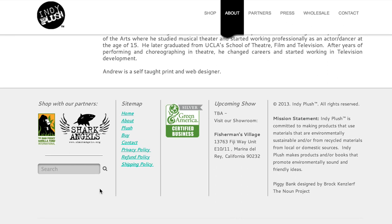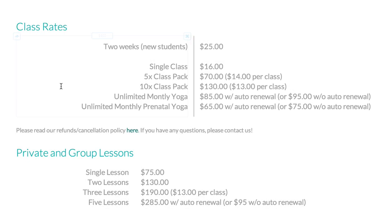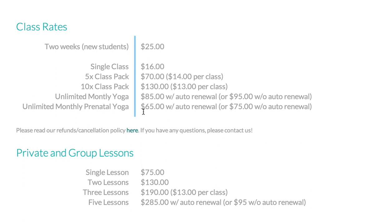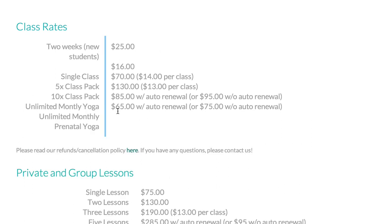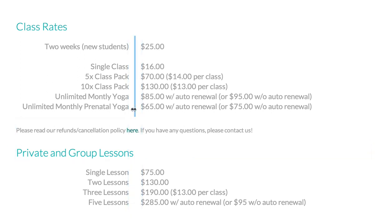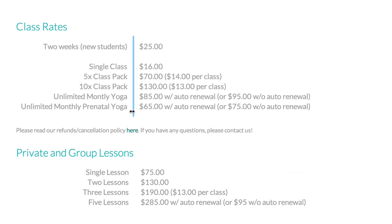Now you might worry that having the option to so easily create columns could lead to a sloppy looking page. But now when you adjust the width of any column, we'll automatically guide and snap it to columns above or below it so your content doesn't look lopsided. But you won't be limited by this either, as you can still drag the column divider wherever you like, simply by holding down the shift key and moving it as usual to the left or to the right.